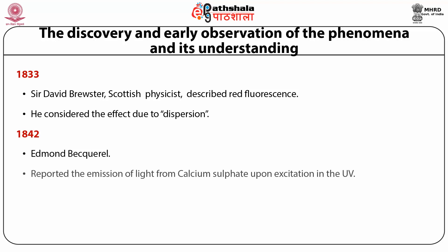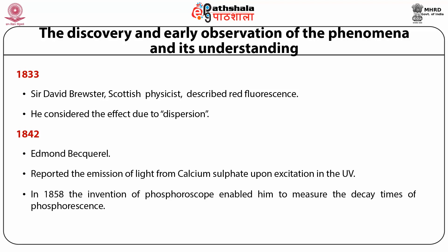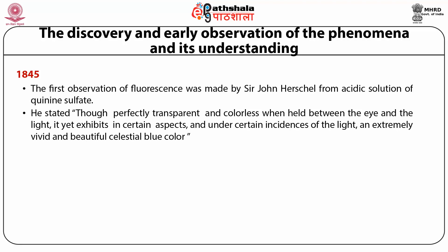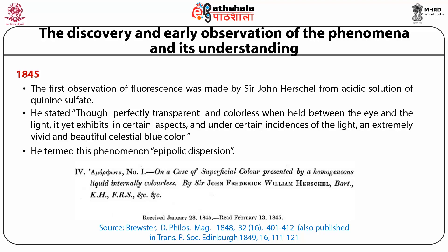Edmund Becquerel in 1842 reported the emission of light from calcium sulphate upon excitation in the UV, noting that the emission occurs at a wavelength longer than that of the incident light. In 1858, his invention of the phosphoroscope enabled him to measure the decay time of phosphorescence. In 1845, the first observation of fluorescence was made by Sir John Herschel from an acidic solution of quinine sulphate — he described the solution as exhibiting an extremely vivid and beautiful celestial blue colour, and termed this phenomenon epipolic dispersion.